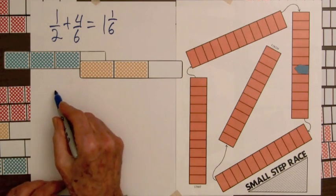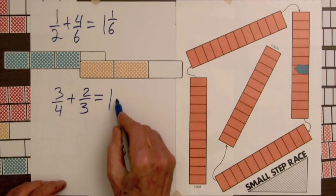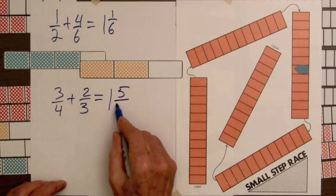We can write the sum for these fractions. Three-fourths plus two-thirds equal one and five-twelfths.